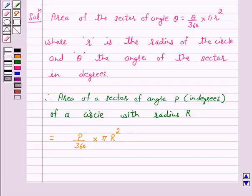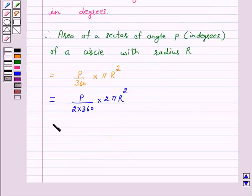Now this can be written as the area of a sector of angle is again equal to P upon 2 times 360 into 2πR², which equals P upon 720 into 2πR².